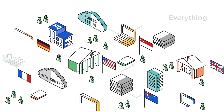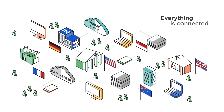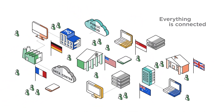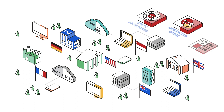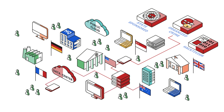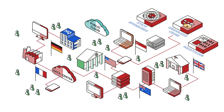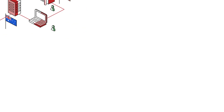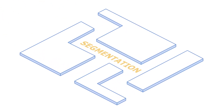Everyone knows we're living in a world where everything is connected to everything. Unfortunately, this includes hackers. It's just a matter of time — a skilled adversary is going to get in. Knowing this, how do you stop them from moving laterally across your network? One word: segmentation. So why aren't more people doing it?